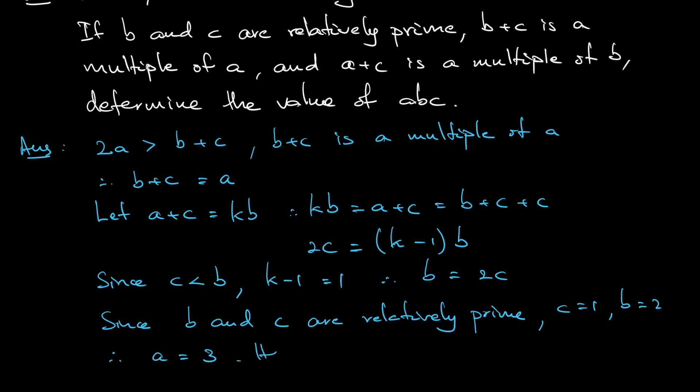The question asks for the value of the product, so 1 times 2 times 3, that will give you 6. So the answer is 6. Try to remember the conditions, the question gives 3 conditions. With these conditions, you can imply back and forth so that the value of a, b and c are determined. As you can see from this question, a is 3, b is 2 and c is 1.